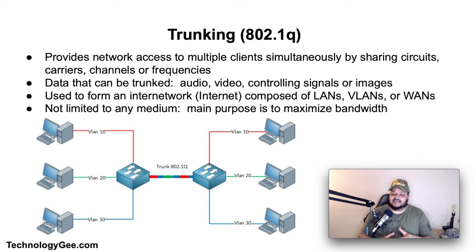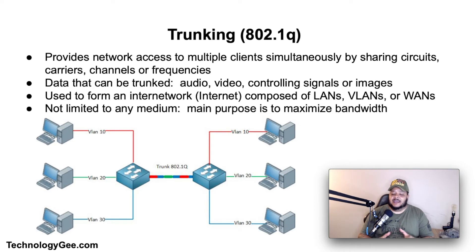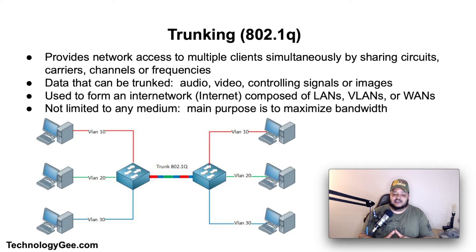Trunking is a technology for providing network access to multiple clients simultaneously by sharing a set of circuits, carriers, channels, or frequencies instead of providing individual circuits or channels for each client. It is a technique used in data communications transmission systems to provide many users with access to a network by sharing multiple lines or frequencies. As the name implies, the system is like a tree with one trunk and many branches. The data transmitted through trunking can be audio, video, controlling signals, or images.